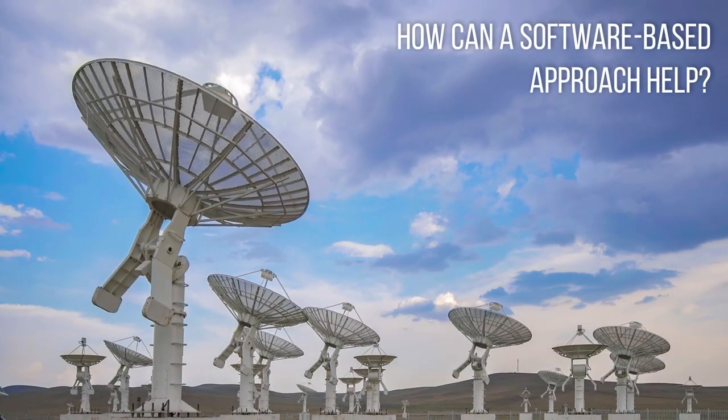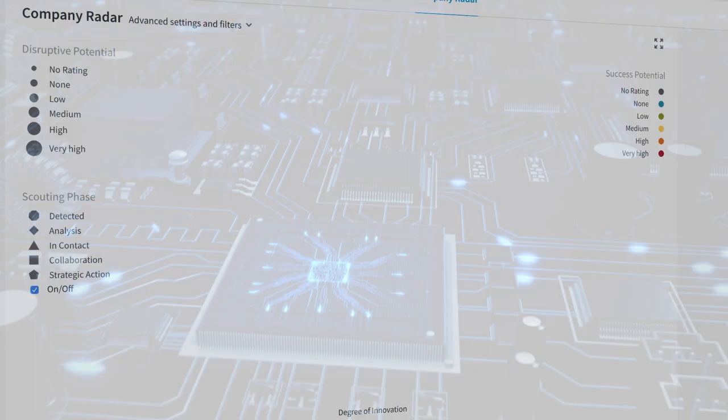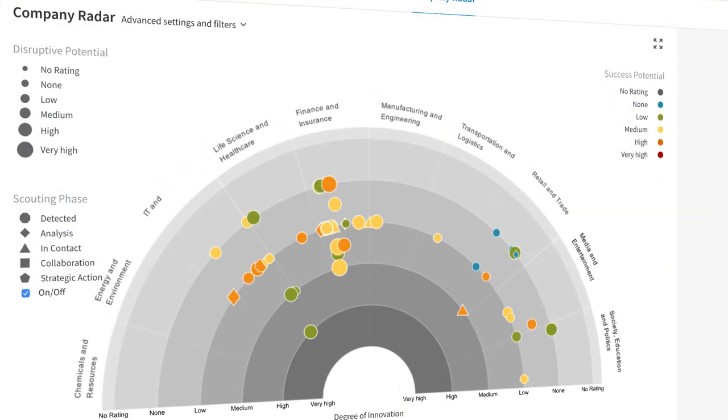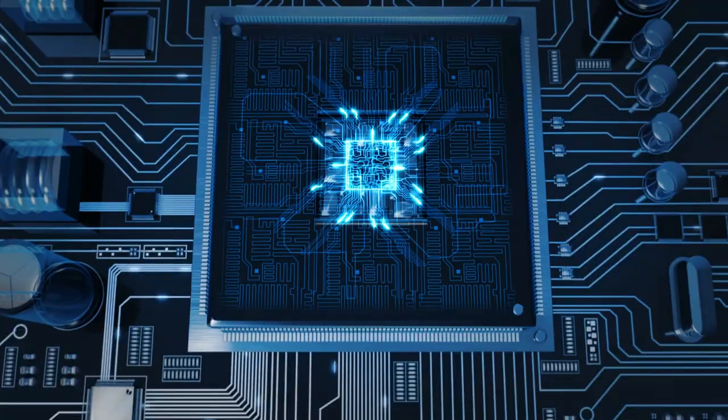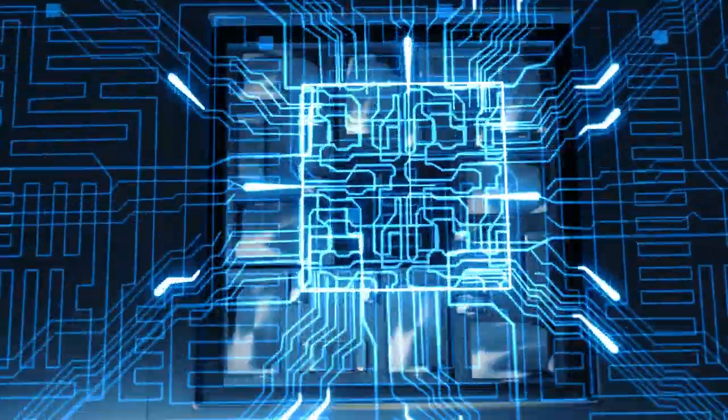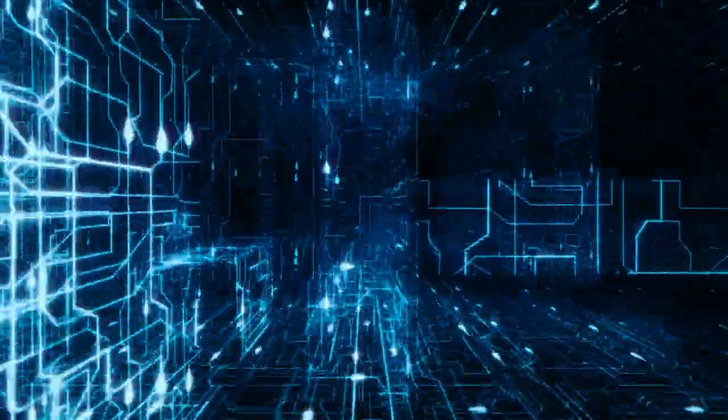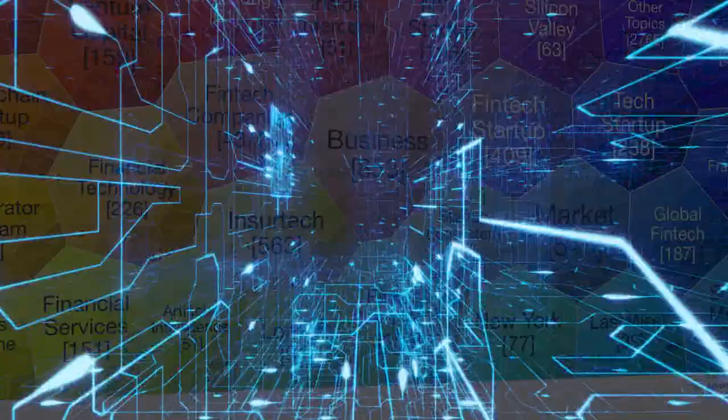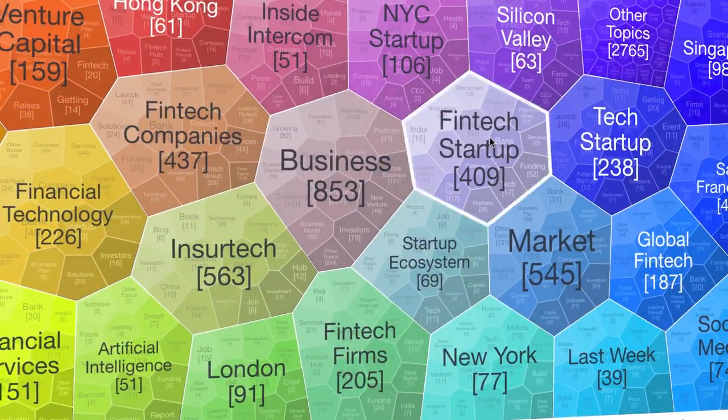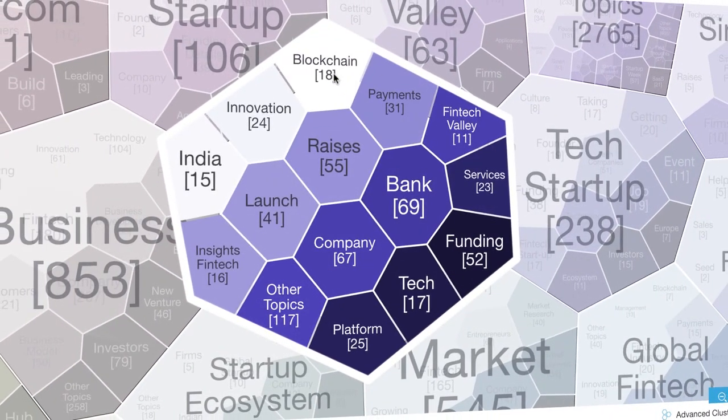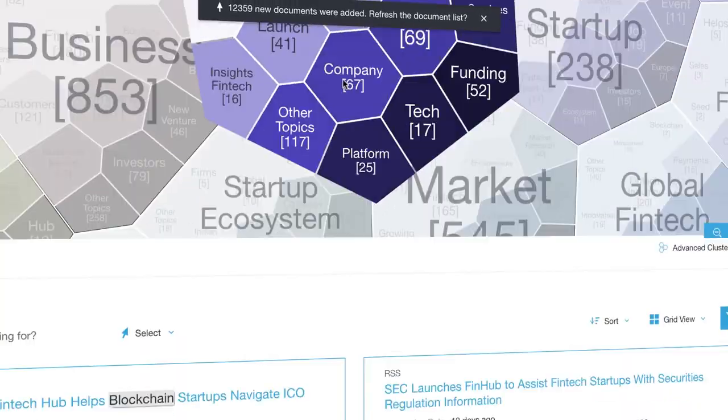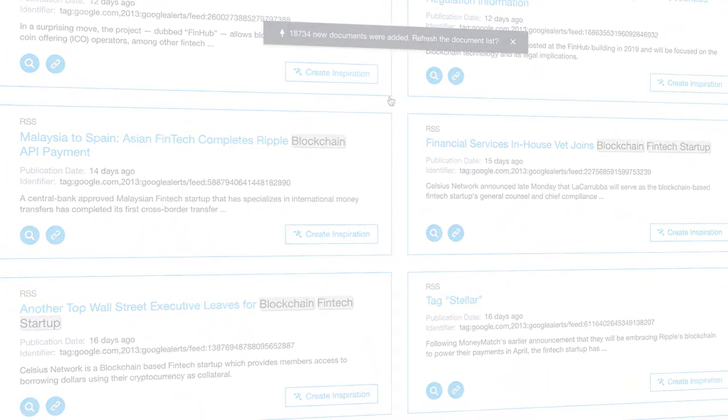You can integrate different data streams into one central platform, and you can nowadays make use of artificial intelligence to make things easier and faster where it makes sense. And what you do with that is you build a knowledge base in a short amount of time that can be provided to everyone in your organization.